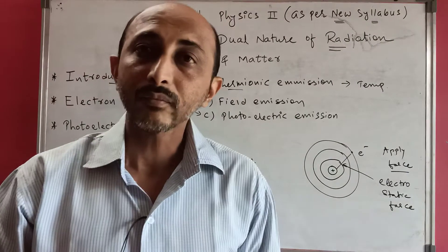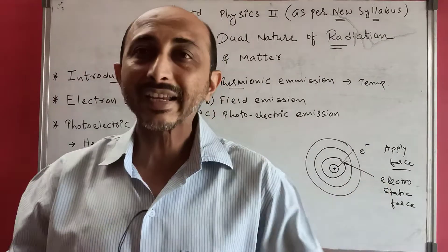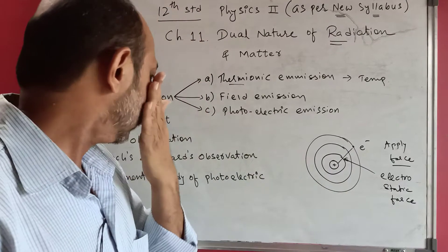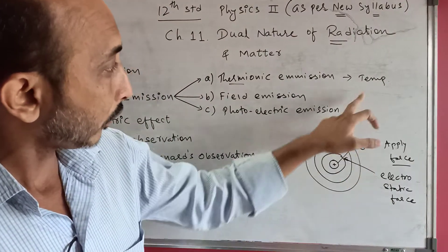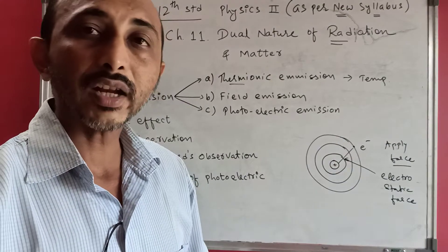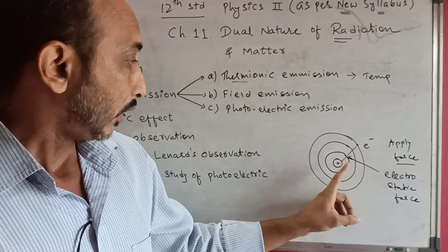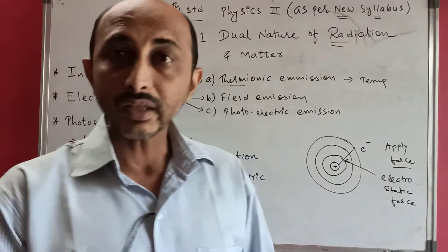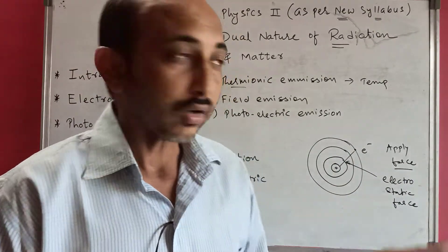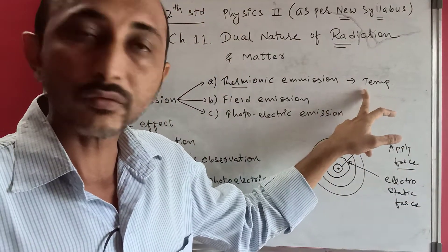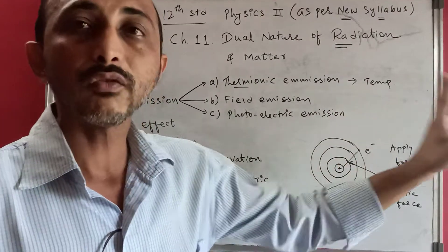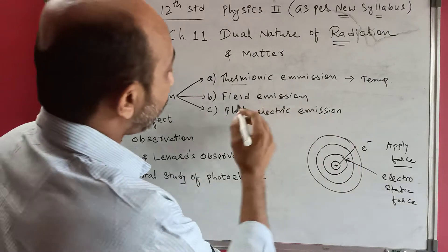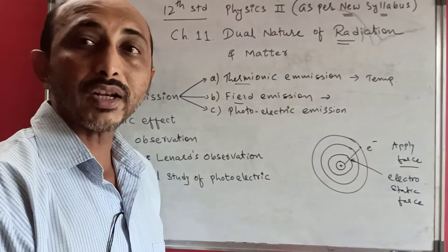When we apply temperature to the atom, the electron gains kinetic energy. If its energy increases, the bond between the nucleus and electron is broken by that kinetic energy — the temperature given from outside — and the electron is free to move. That is called thermionic emission.